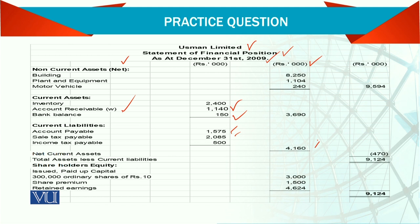Now we are left only with equity. Equity is issued and paid-up capital, which includes the new shares issued, plus a share premium of 1,500, and the retained earnings. These figures come from the statement of changes in equity, which shows whatever belongs to the shareholders — the owners of the company. Their total stake is 9,124,000, so the total amount available to stakeholders is 9,124,000.